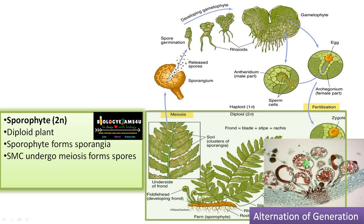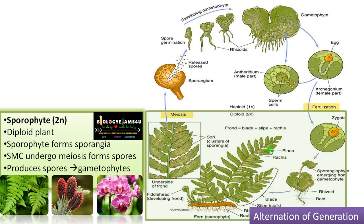You can see the haploid spores. These spores on germination finally form the gametophyte. The sporophytic phase is the dominant phase in higher vascular plants like pteridophytes, gymnosperms, and angiosperms.